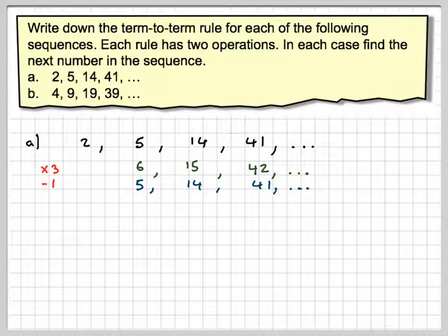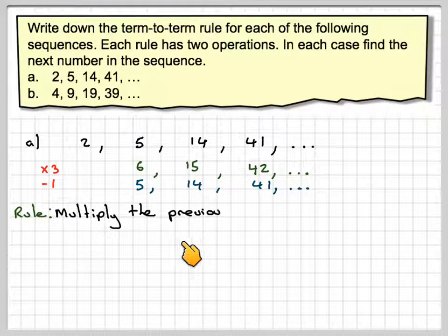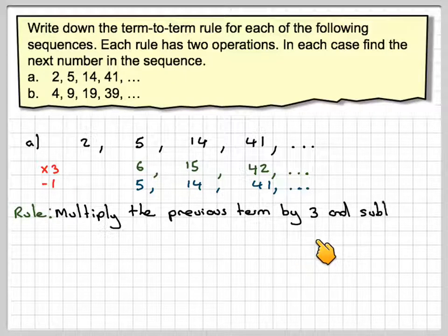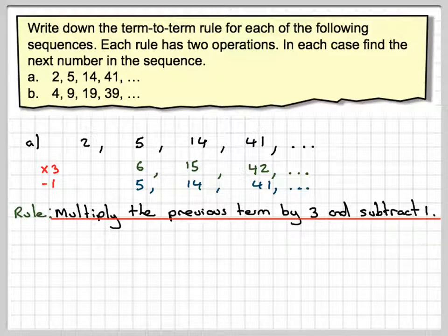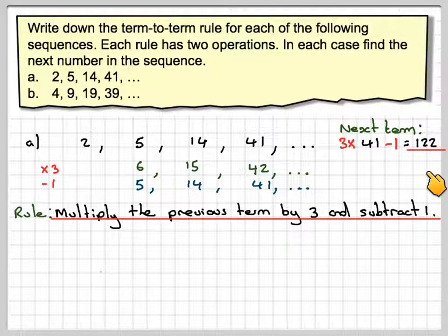So it looks like the rule is multiply the previous term by 3 and then subtract 1. So if I now apply it to this, multiply 41 by 3 and then take away 1, that will give me 122. That's the next number in that sequence.